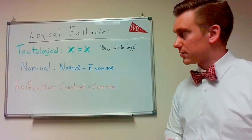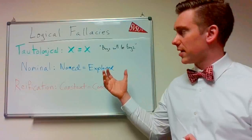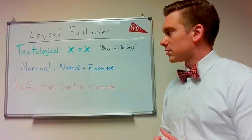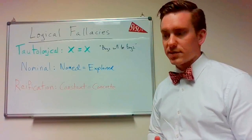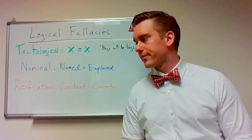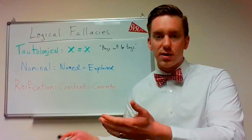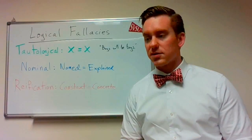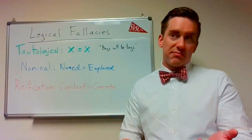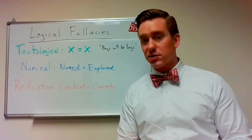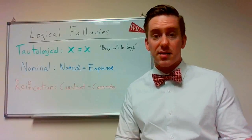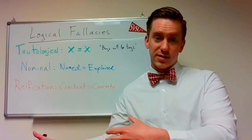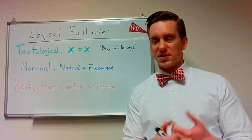The second one here is the nominal fallacy. What this essentially boils down to is that you're acting as though naming something has explained something. So to step outside of psychology, for instance, imagine that a young child points to a bug and says, what is that and why is it doing that and the parent says, oh, that's a spider. That doesn't actually explain anything about the animal. It just gives it a label. It gives it a name. So to act as though a name fully explains something or gets to the roots of how something works is a bit of a fallacy.